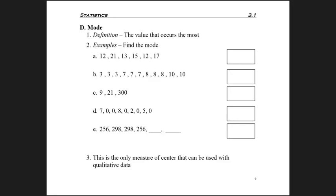So a third measure of center is called the mode. The definition of mode is the value that occurs the most, so it has to repeat and it has to repeat the most amount of times of any repeats.